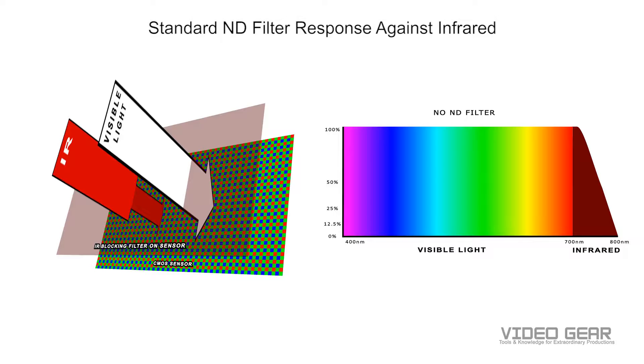Hey guys, it's Dominic here from Video Gear, and today we're going to talk about two types of neutral density filters. We have standard ND and IR ND, like the Spirecrest from Format High Tech. Let's look at the differences.